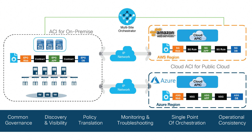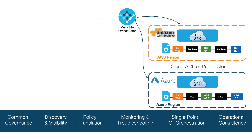It configures the data path between the on-premises Cisco ACI fabric and the cloud site for on-premises to cloud connectivity configurations, and also configures cloud site to cloud site connectivity.